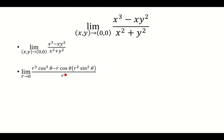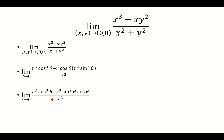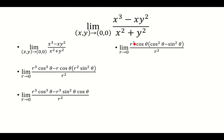Now we can multiply this out. So r cosine theta times r squared sine squared theta is r cubed times sine squared times cosine theta. Now I can factor out the r cubed cosine theta from the top and I'm left with cosine squared minus sine squared. I can cancel out the r squared and then the cube here just becomes r.